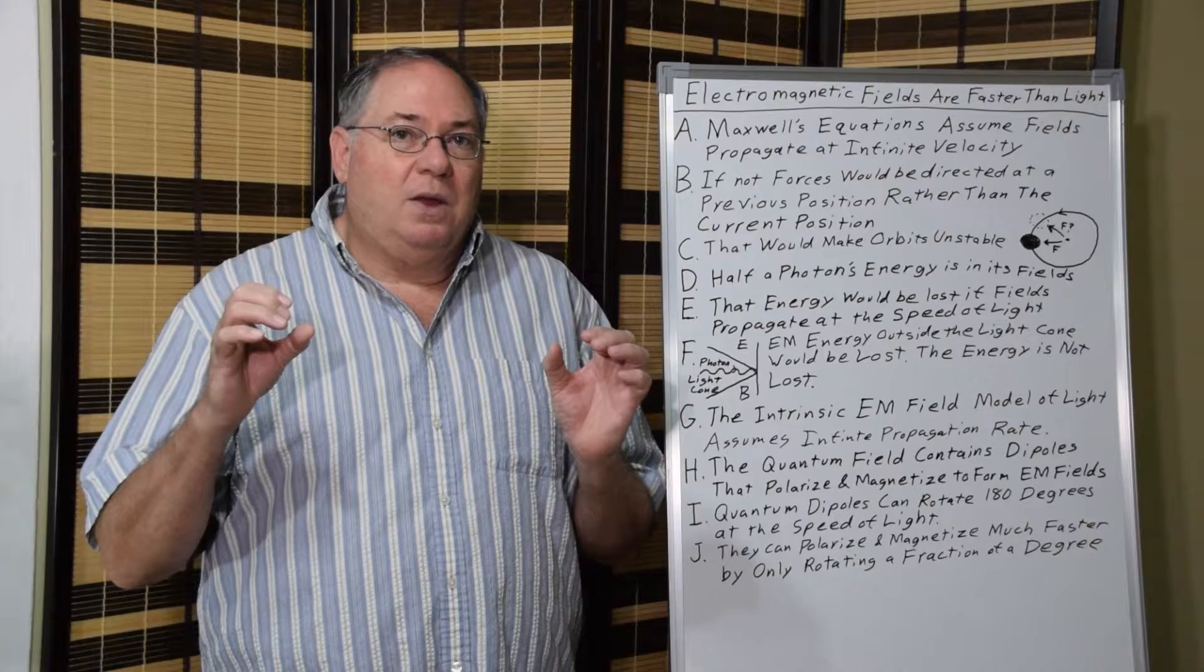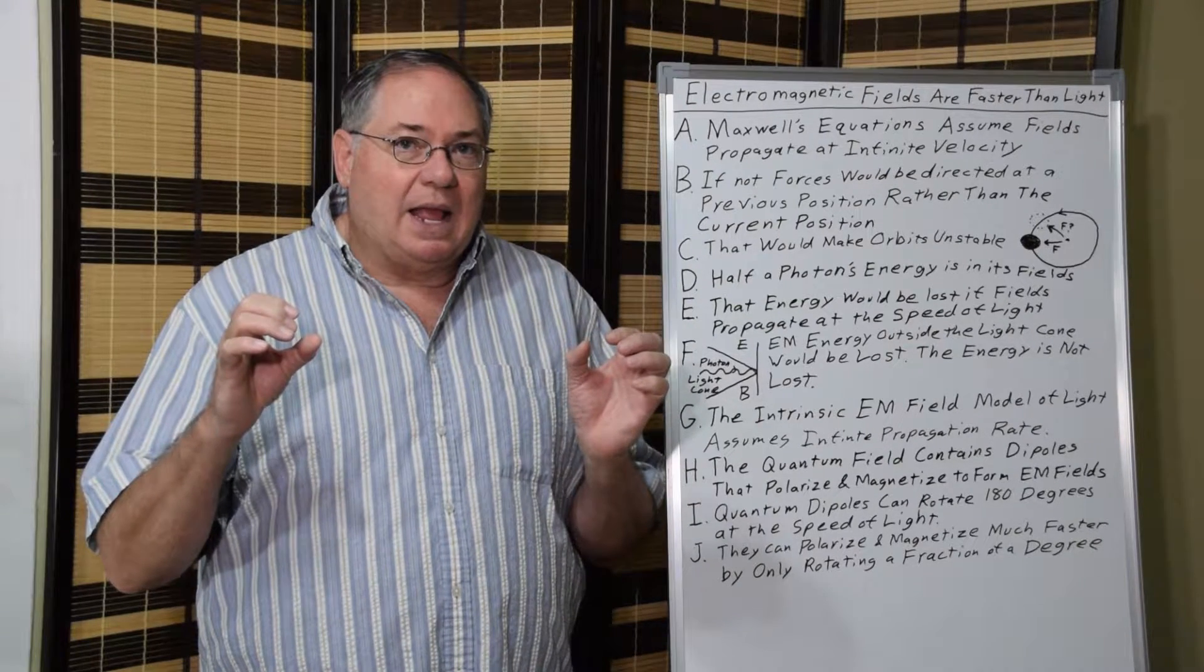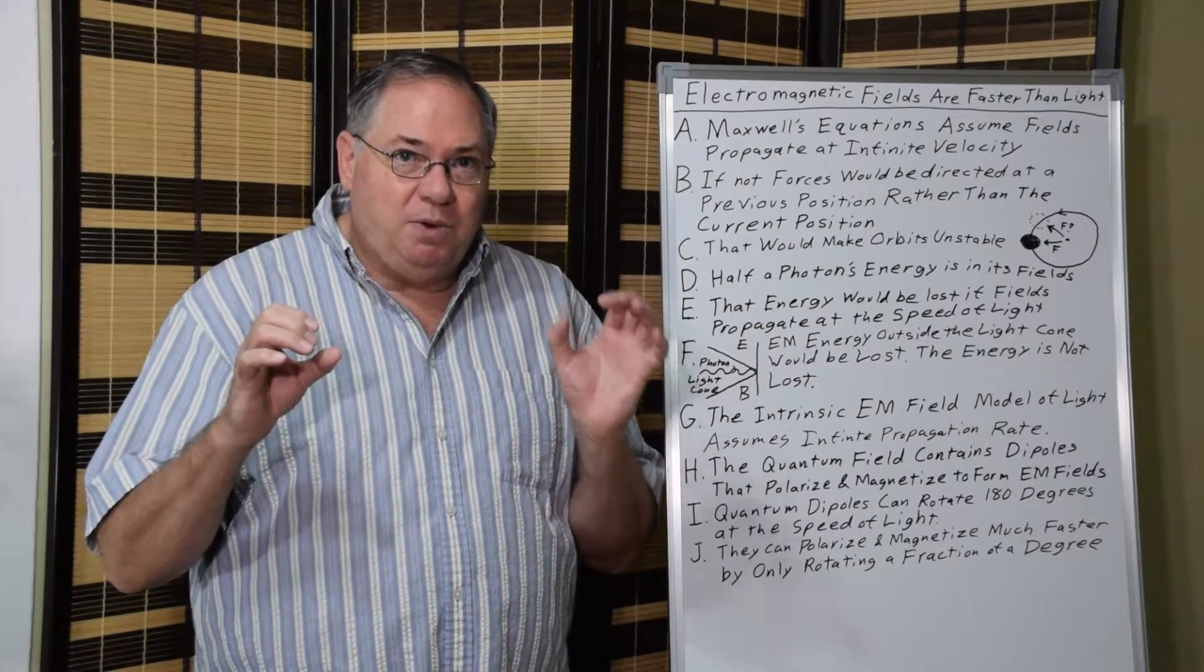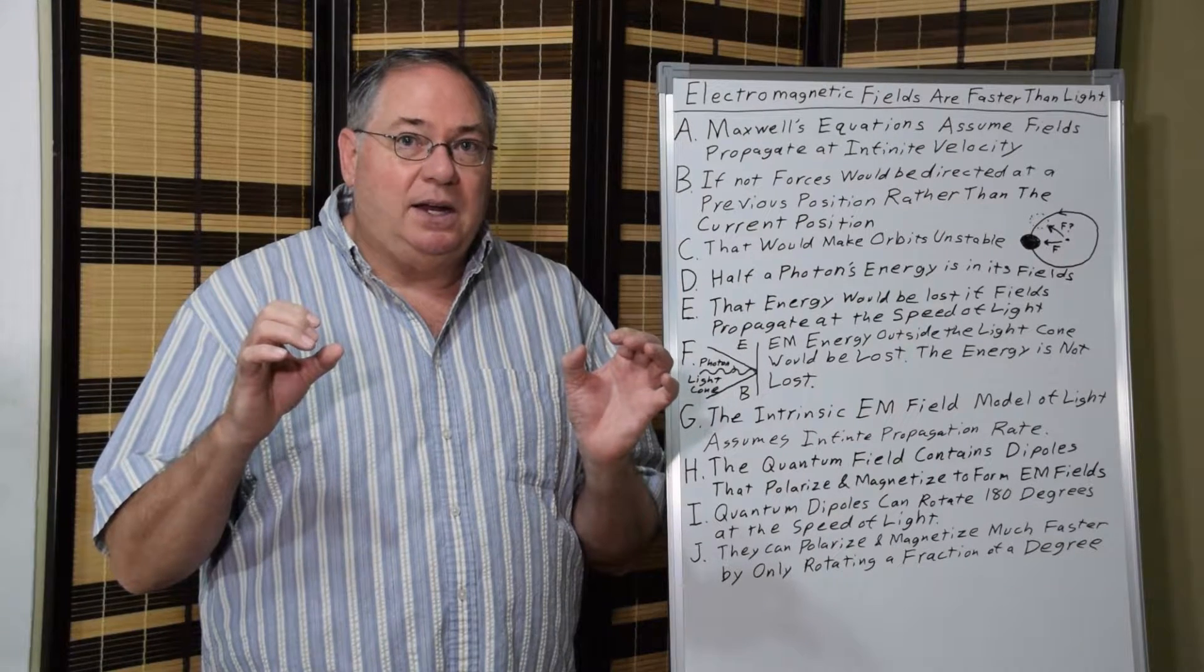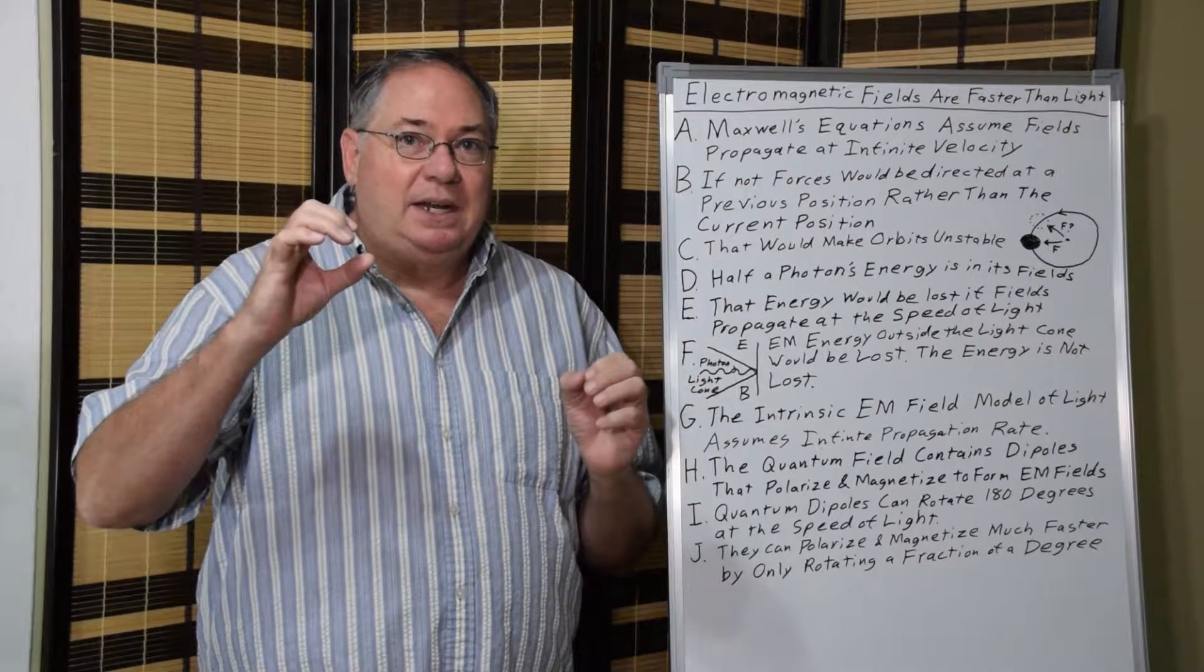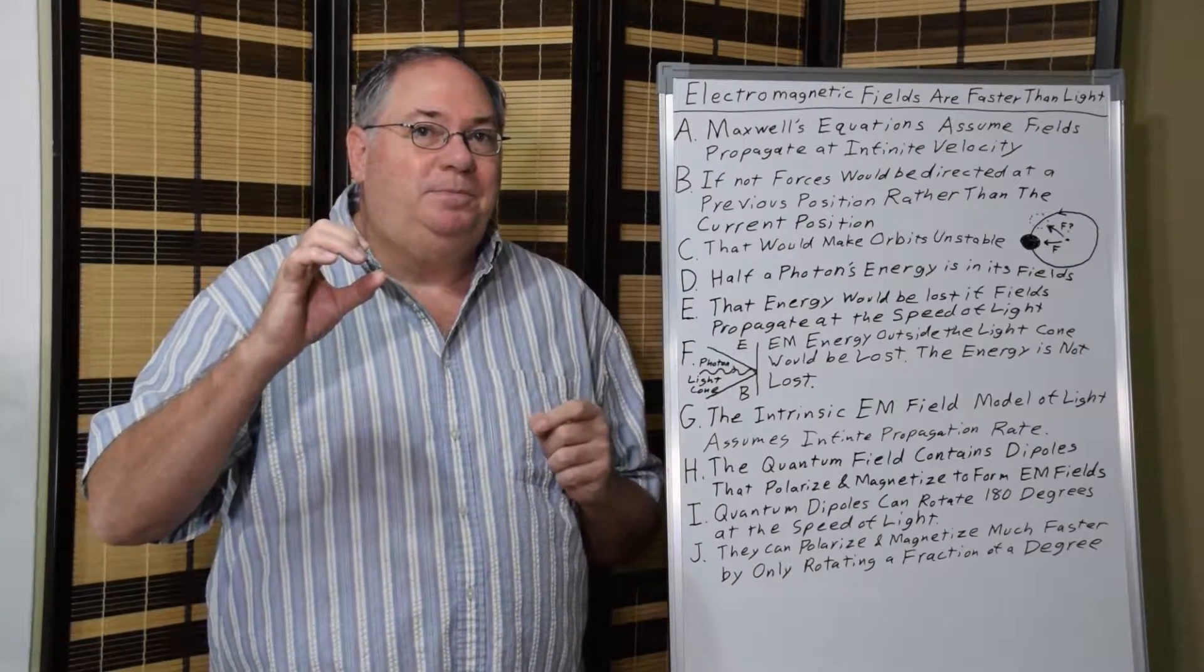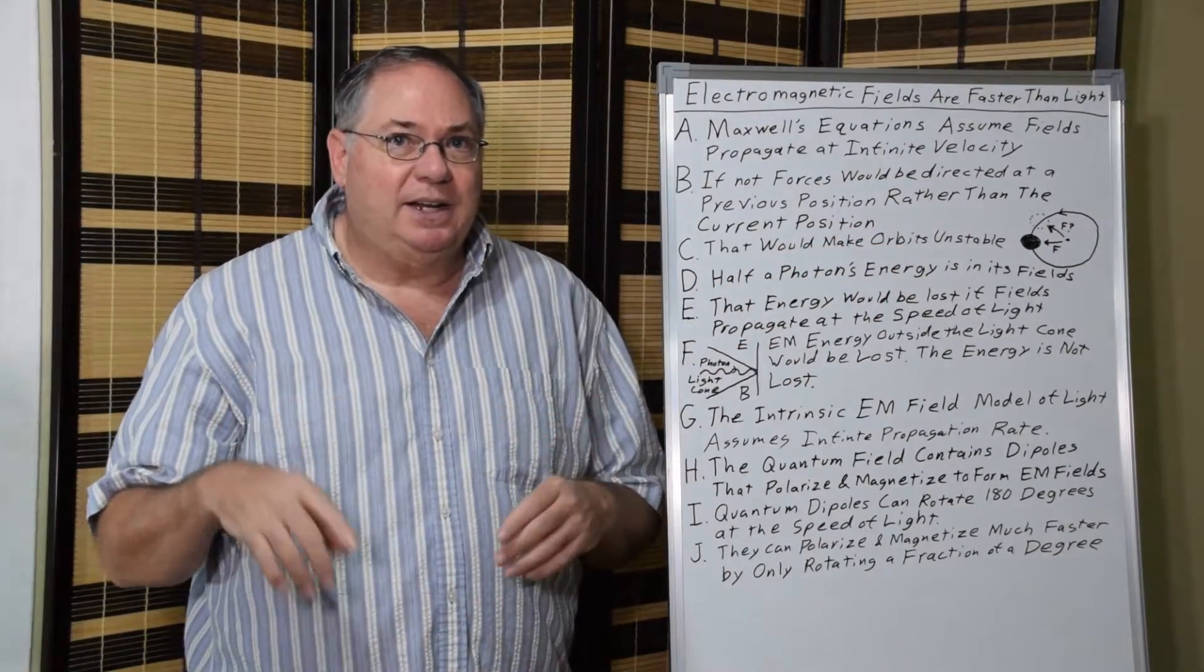What will happen is that when the object is here, when it sends its signal, the light signal would arrive at a later time because it takes time. And during that time, the object has moved. So when this object sees this object, it sees it here when it's actually here. And I drew a little sketch to try to illustrate that.